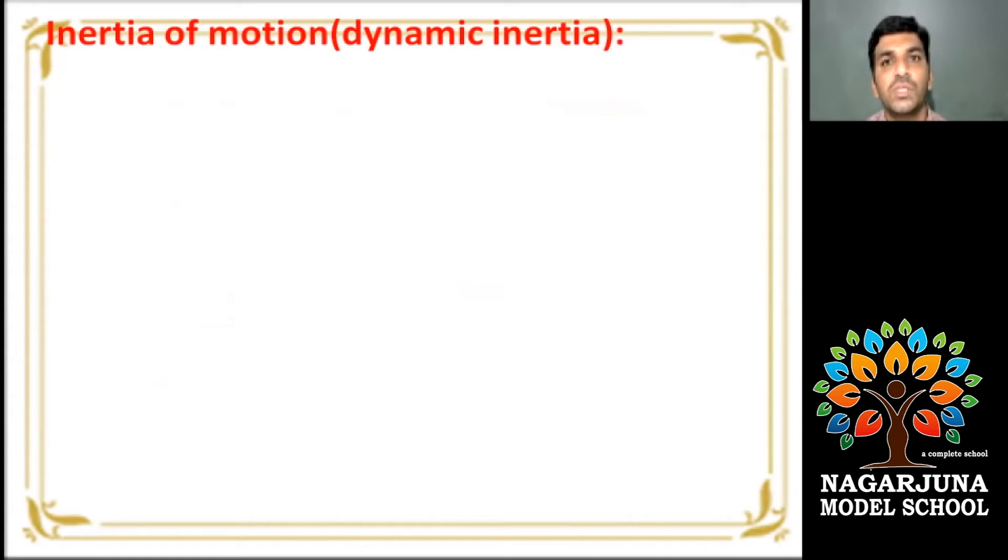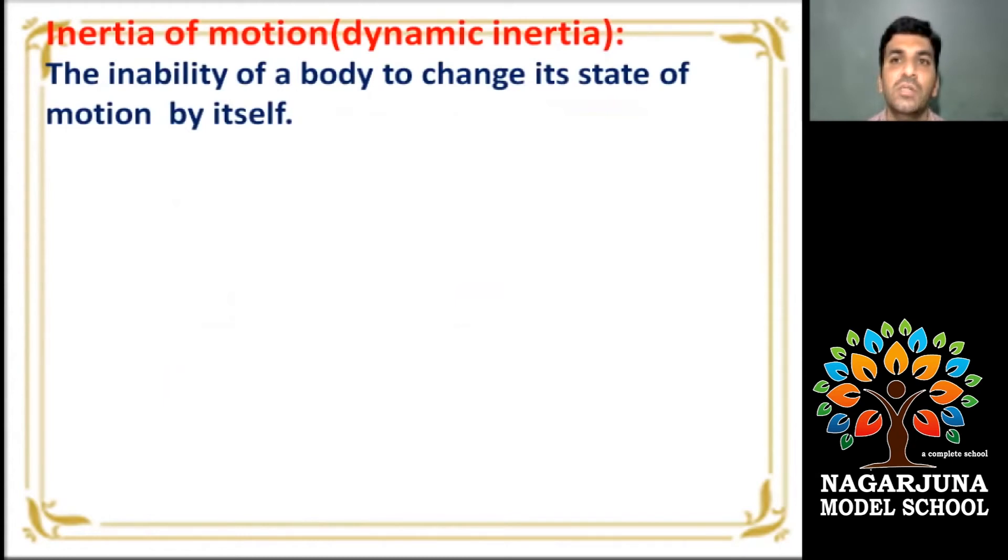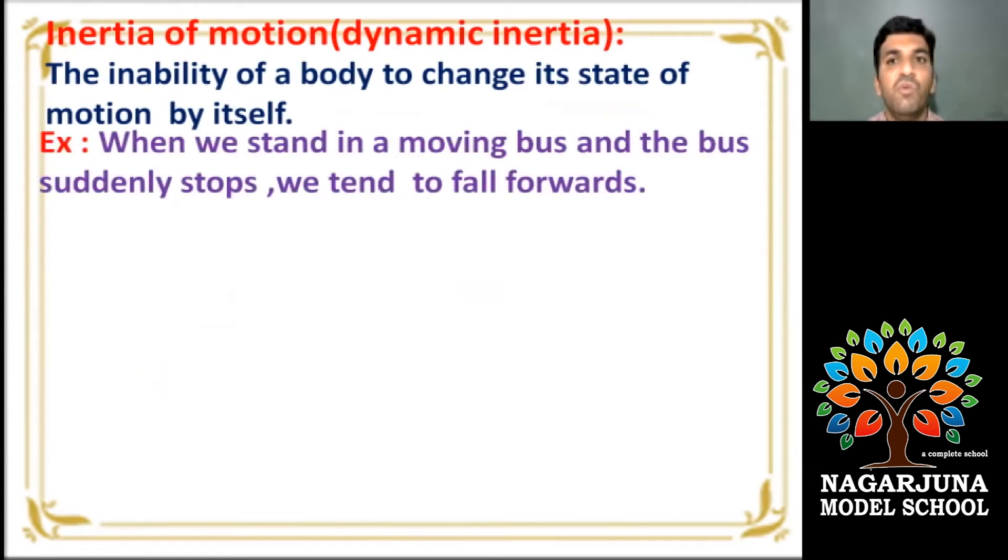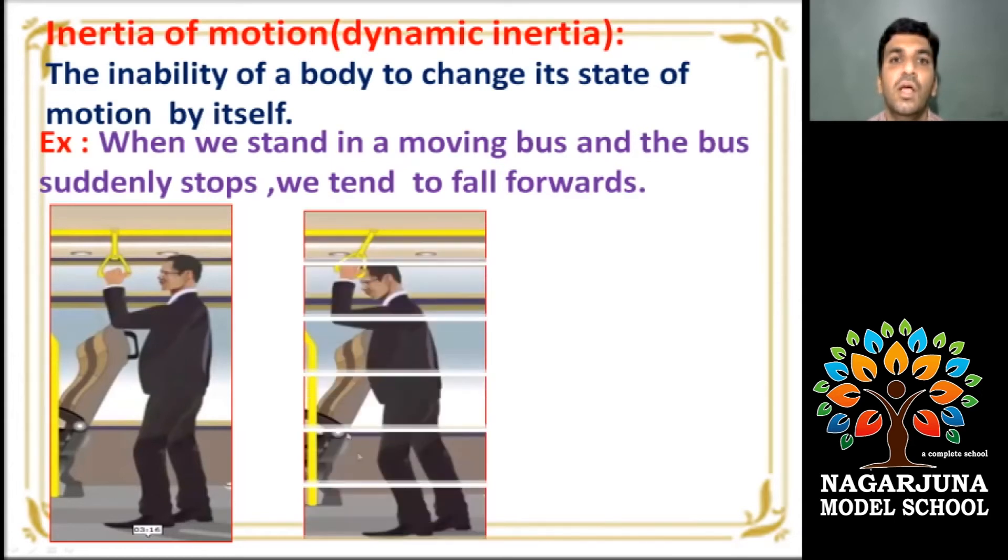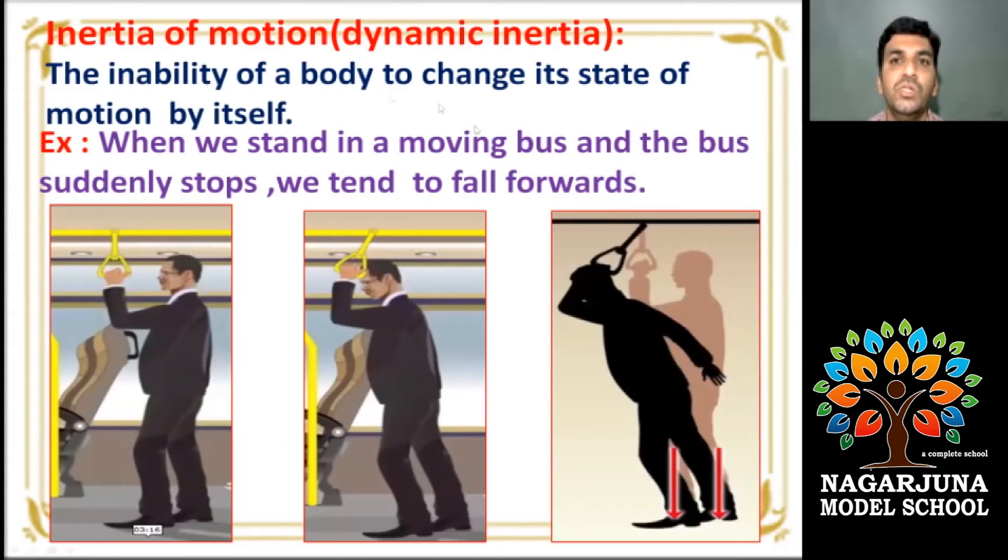What about inertia of motion? Inertia of motion. It is also known as dynamic inertia. Right? The inability of a body to change its state of motion by itself. When we stand in a moving bus, the bus suddenly stops. We tend to fall forwards due to inertia of motion. Here, the person resists in its state of motion and come to rest. Clear?